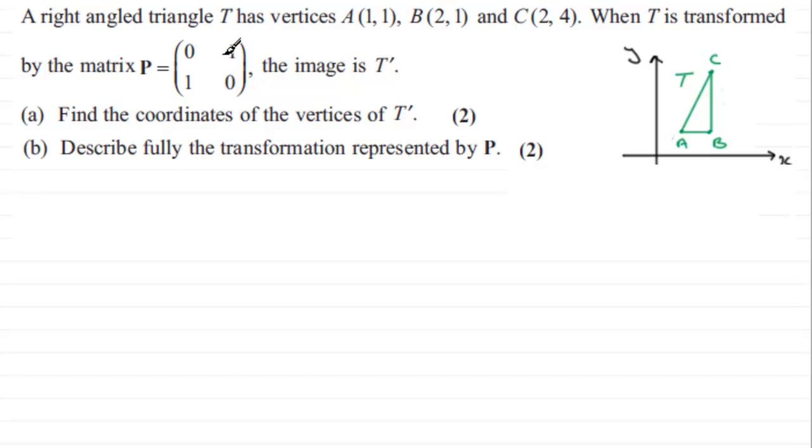So when we're trying to work out T prime, all we've got to do is take the matrix P and multiply it by the matrix that represents this triangle T. So we'll start then with part a, and what we've got here is just copy down matrix P which is (0,1; 1,0).